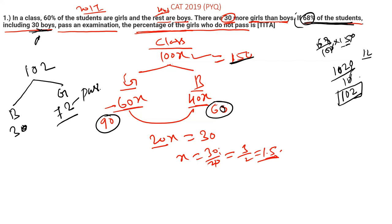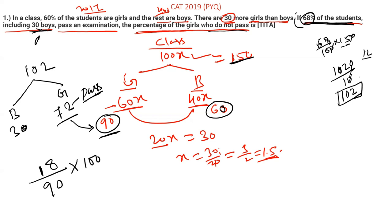72 girls pass the examination. So how many girls do not pass? Subtract 72 from 90 — that gives 18 girls who do not pass the exam. But we have to find the percentage of girls who do not pass, so 18 out of 90 into 100 equals 20%. So the answer is 20%.